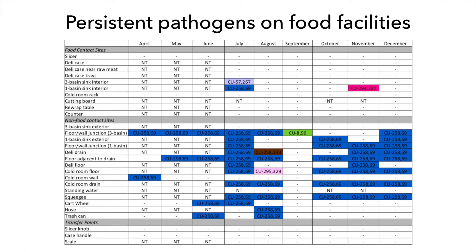This pattern can also be found in retail. In this example, samples were collected from 30 delis for over nine months to look for listeria monocytogenes. Once found, the bacteria were characterized with PFGE, another DNA fingerprinting method, and the different listeria strains were marked with different colors. Over nine months, the blue listeria was found every single time the deli was sampled, except in September.